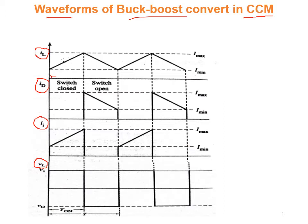The first sub-interval is when the switch Q is on, and the second sub-interval is when the control switch Q is off. When the switch Q is closed, the inductor current is increasing linearly — during this sub-interval the inductor is storing its energy. During the second sub-interval the inductor current is decreasing linearly. This corresponds to one switching period, after which the next cycle starts.